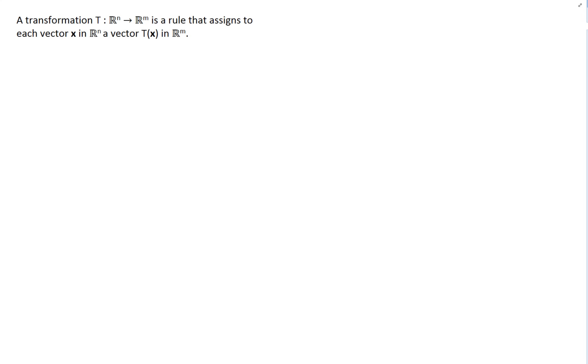First, it is useful to define exactly what a linear transformation is. A transformation T in general from Rn to Rm is a rule that assigns each vector x in Rn a vector T(x) in Rm. Some useful terms are shown here. Rn is the domain of T, Rm is the codomain of T. For every x in Rn, the vector T(x) in Rm is called the image of x, and the set of all images T(x) is called the range of T.